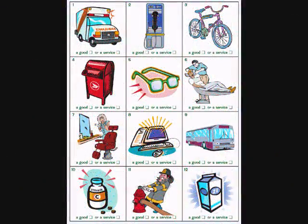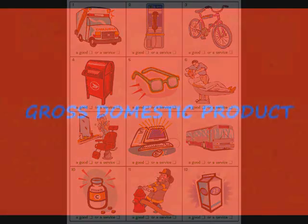The gross domestic product report, part one. The GDP report measures the output of goods and services produced by labor and property located in the United States. In other words, it measures the total economic production of the economy.